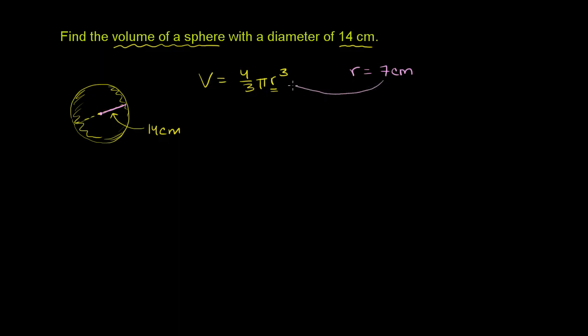So we're going to have volume is equal to 4/3 π times 7 centimeters to the third power. So I'll do that in that pink color. So times 7 centimeters to the third power. And since it already involves pi, you could approximate pi with 3.14.